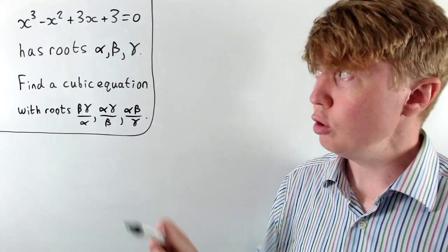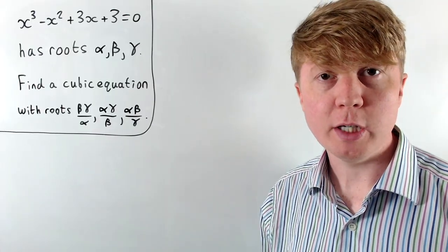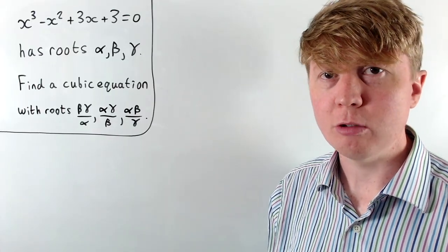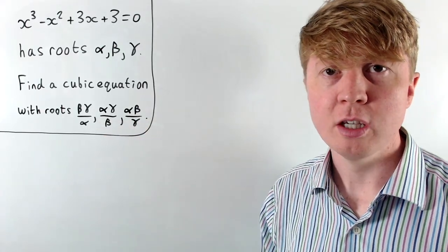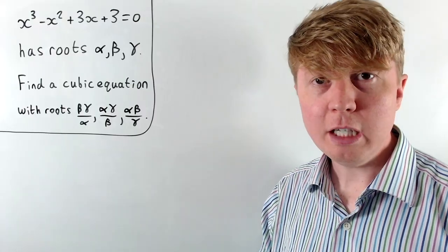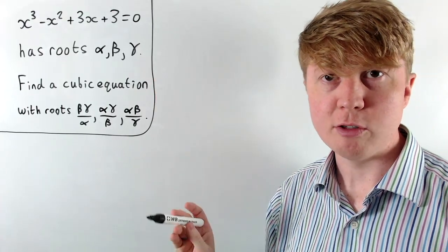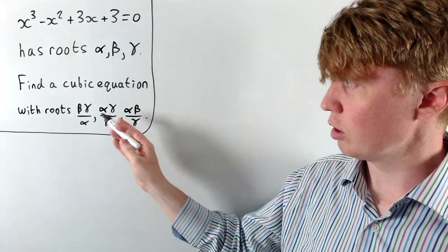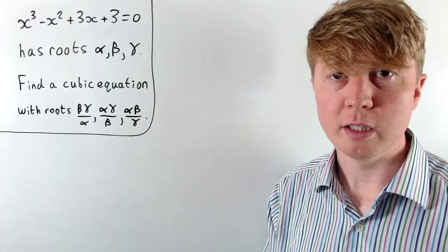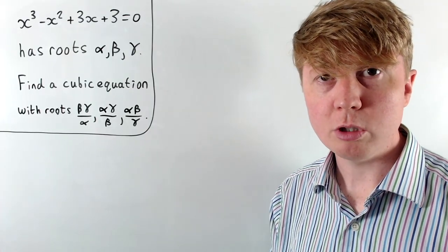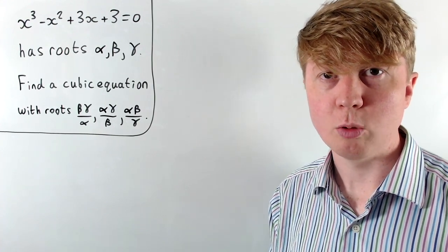We're going to solve this problem where we're given a cubic equation with roots alpha, beta, and gamma, and we need to find another cubic equation with roots beta gamma over alpha, alpha gamma over beta, and alpha beta over gamma. The natural approach might be to solve the cubic and find alpha, beta, and gamma, but unfortunately solving this cubic is extremely difficult. So we're going to look at a neat way of doing this that bypasses the need to actually solve our cubic equation.